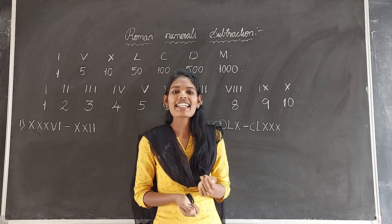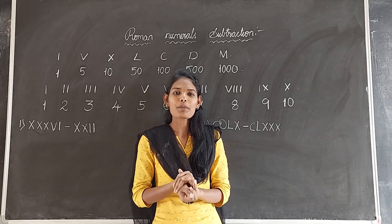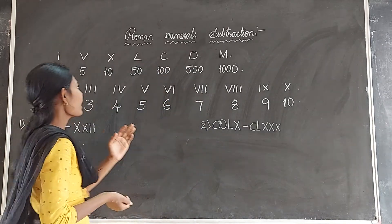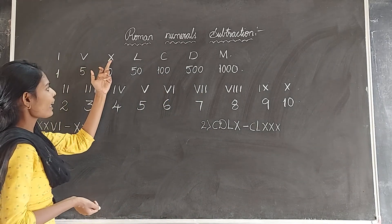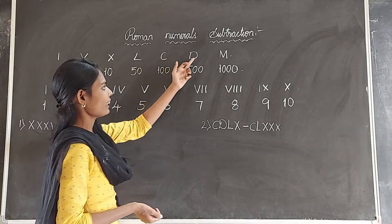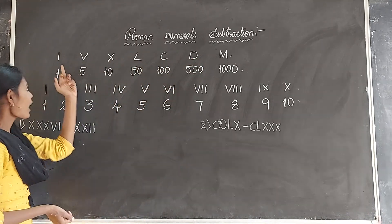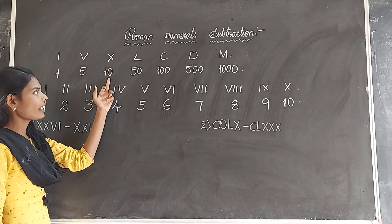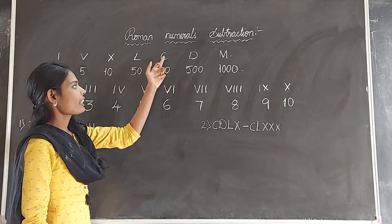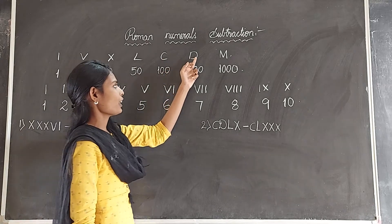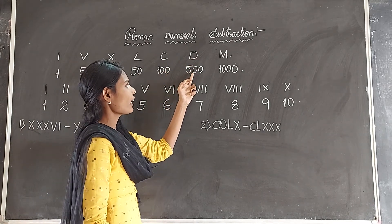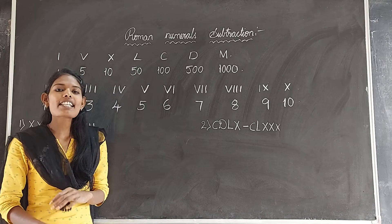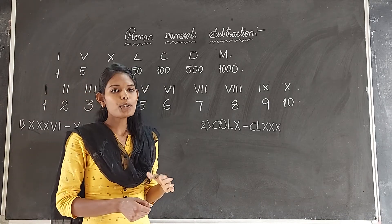We all know that there are several basic symbols in Roman numerals: I, V, X, L, C, D, M. I means 1, V means 5, X means 10, L means 50, C means 100, D means 500, and M means 1000. These are the seven basic Roman numerals.